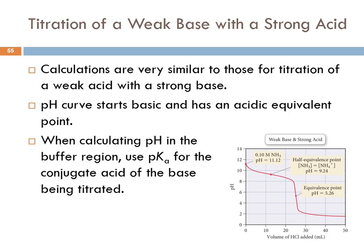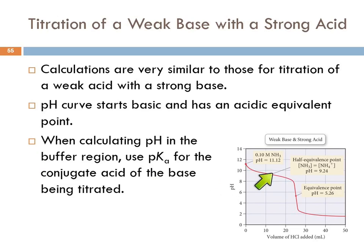What if you flip it around and titrate a weak base with a strong acid? Same thing, basically in reverse. The calculations are very similar — just flip Ka and Kb, flip the acids and bases. The curve starts out basic and goes acidic after the equivalence point. The equivalence point will be less than 7 — the opposite. When calculating pH in the buffer region, though, you still use pKa, not pKb.